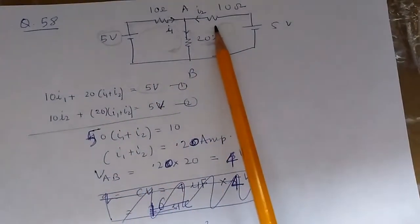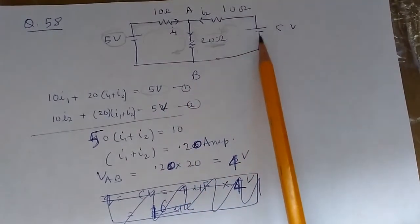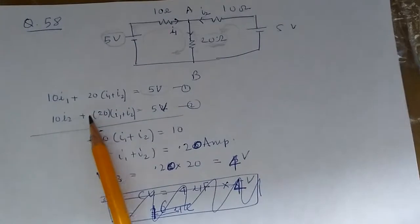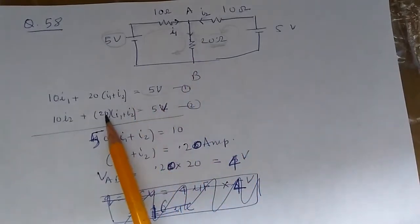The same way, we apply Kirchhoff's law in this loop. We get 5 volts from the power supply, an IR drop of I2 times 10 ohms, plus a drop across AB of I1 plus I2 times 20.